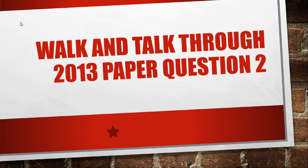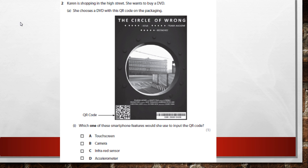Let's go through the 2013 paper question 2. Karen is shopping in the high street and wants to buy a DVD. She chooses a DVD with a QR code on the packaging — you've probably seen these. The question asks: which smartphone feature would she use to input the QR code? Options are touchscreen, camera, infrared sensor, or accelerometer. The answer is B — the camera — which photographs the QR code and takes you to a website or promotion.